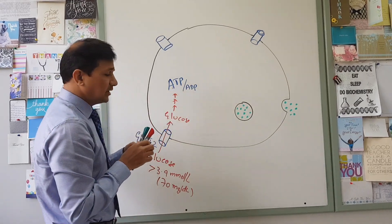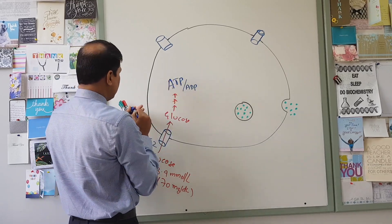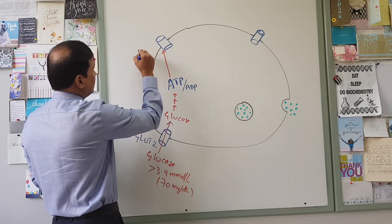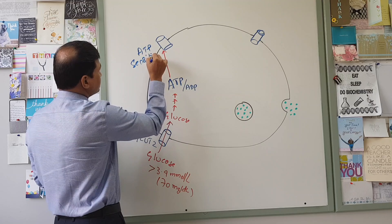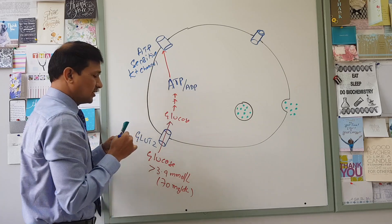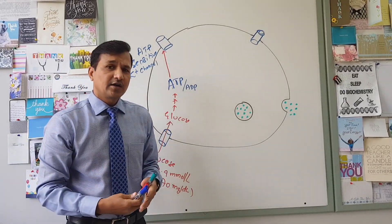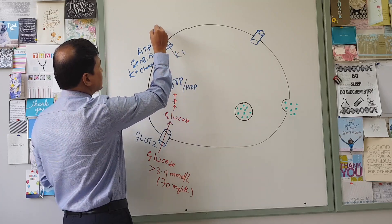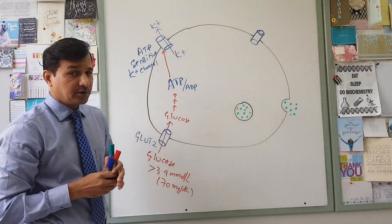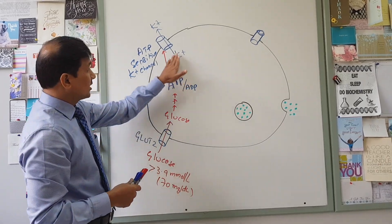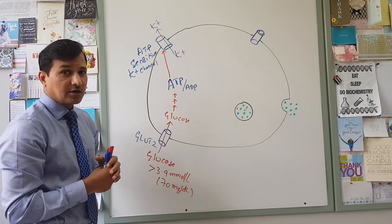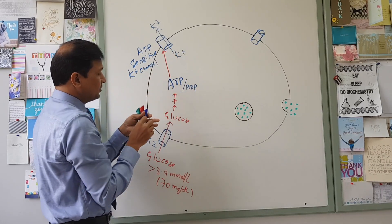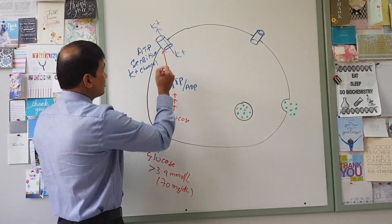ATP levels are much higher than ADP levels. These ATPs will go and bind to the ATP-sensitive potassium channel. Normally under basal conditions, when blood glucose is not at high concentration, this ATP-sensitive potassium channel transports potassium out of the beta cells into the extracellular matrix. Whenever glucose enters, undergoes oxidation, and makes a lot of ATPs, those ATPs bind to the ATP-sensitive potassium channel and close it.